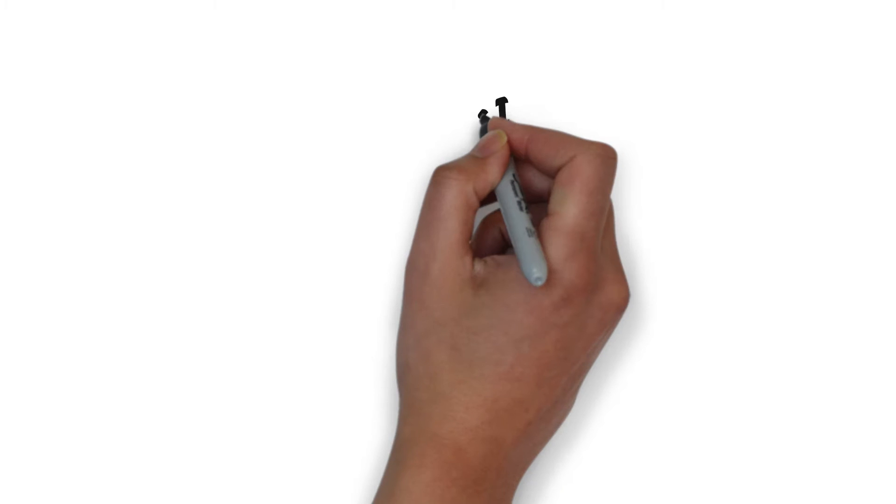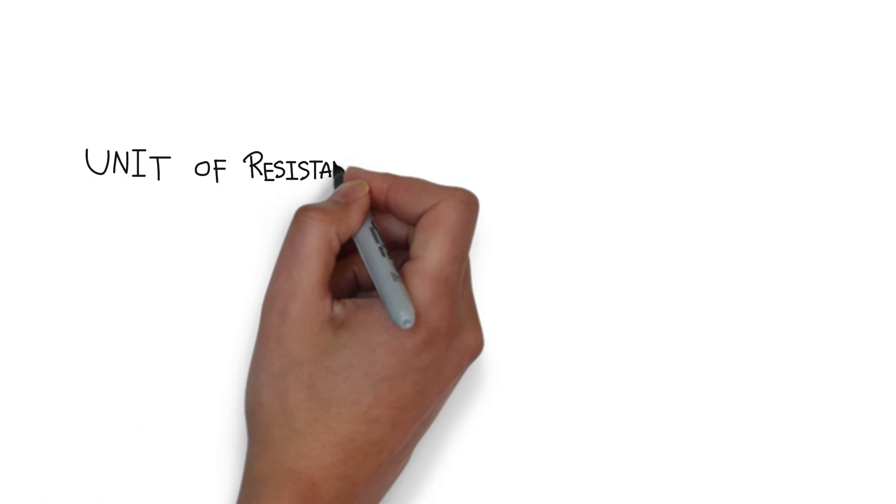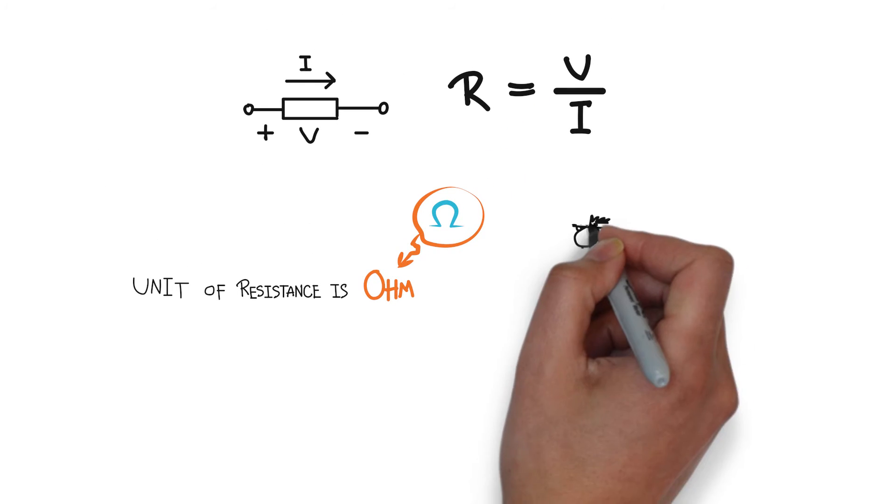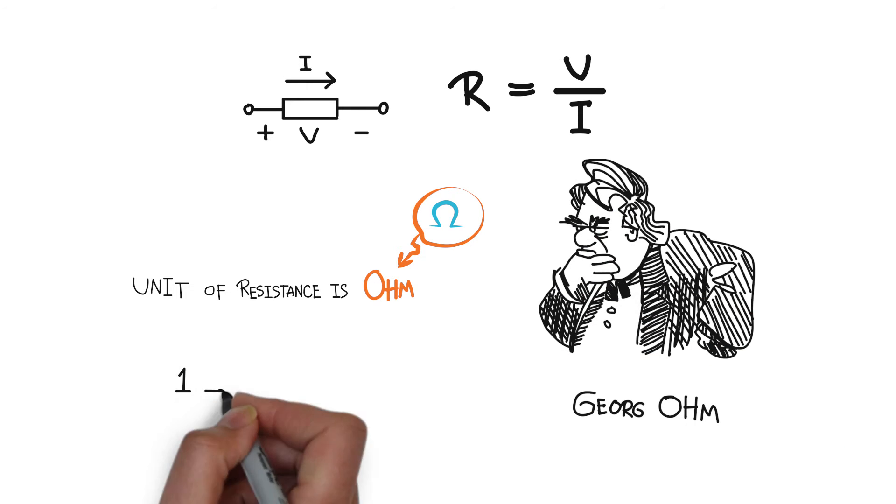Resistance is essentially the ratio of the voltage to the current. The unit of resistance, that is ohms, is named after a German physicist, Georg Simon Ohm. And one ohm is equal to one volt per ampere, or one volt per amp.